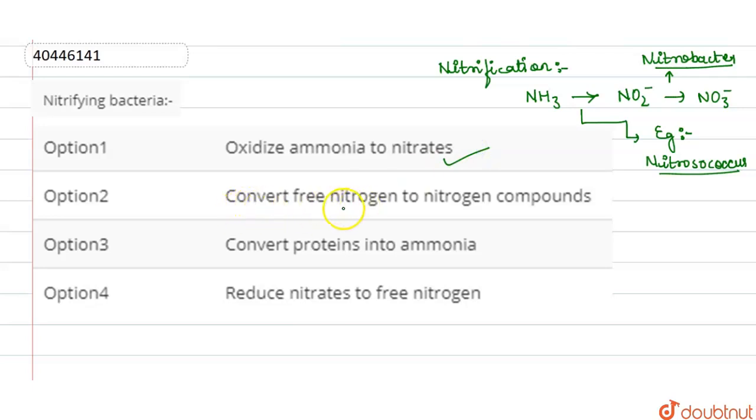Option 2 is to convert free nitrogen to nitrogen compounds. Free atmospheric nitrogen converting to ammonia is called biological nitrogen fixation. Nitrifying bacteria do not perform this, so this option is wrong.